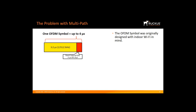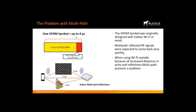The OFDM Symbol was originally designed with indoor Wi-Fi in mind. In an indoor environment, multipath reflected RF signals were expected to come back very quickly. The pre-11AX OFDM Symbol was composed of a data portion that is 3.2 microseconds long with a guard interval of 0.4 or 0.8 microseconds. When using Wi-Fi outside, because of increased distances, echo, and reflections, multipath presents a problem. Long OFDM Symbol helps to correct this problem.